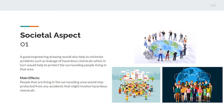As for the societal aspect, a good engineering drawing would also help to minimize accidents such as leakage of hazardous chemicals, which in turn would help to protect the surrounding people living in that particular area. A good engineering drawing would provide solutions and suggestions to help reduce the possibility of an accident to as low as possible, so that dangerous accidents such as the leakage of hazardous chemicals can be prevented in the future, helping the society to stay protected.